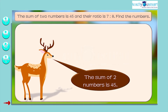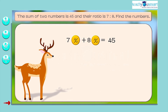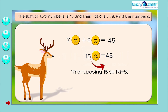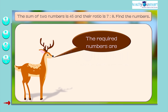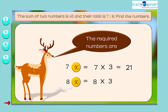Given the sum of two numbers is 45. That is, 7x plus 8x equals 45. So, 15x equals 45. Transposing 15 to RHS, x equals 45 by 15 equals 3. So, the required numbers are 7x equals 7 multiplied by 3 equals 21, and 8x equals 8 multiplied by 3 equals 24.